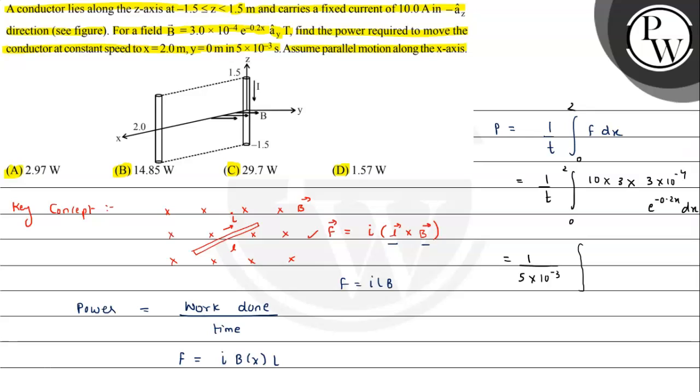We can substitute 1 upon t value here as 5×10^-3, and constant that is 9×10^-2 we can take out. Integration of e^(-0.2x) dx with limit from 0 to 2.